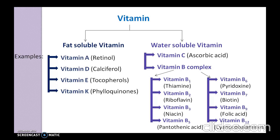So in summary, fat soluble vitamins are vitamin A, D, E, and K, whereas water soluble vitamins are vitamin C and vitamin B complex — that is vitamin B1, B2, B3, B5, B6, B7, B9, and vitamin B12.